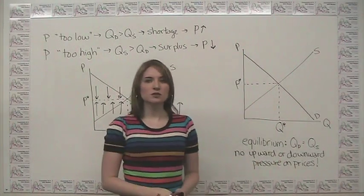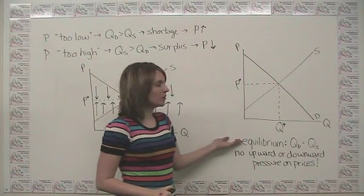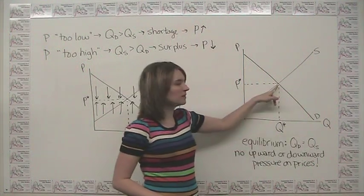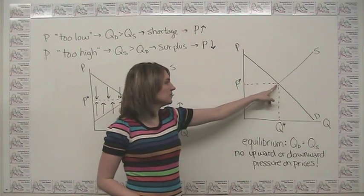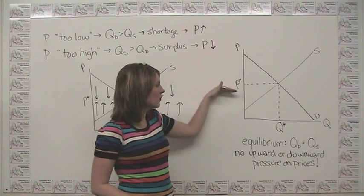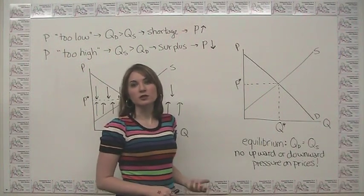Which then brings us to our point over here, where our equilibrium price is where quantity demanded and quantity supplied come together. And the reason that this is, is because this is the only price where there's no upward or downward pressure, because there is neither a surplus nor a shortage.